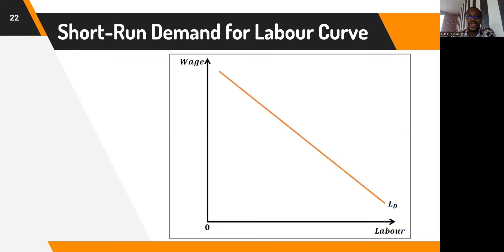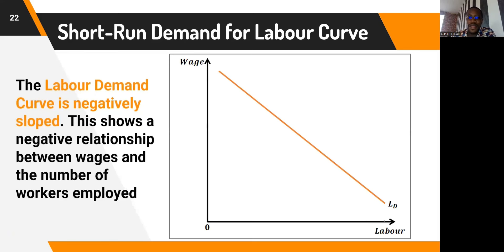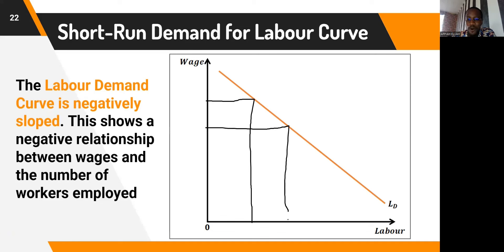When the wage rate was 22 Ghana Cedis, the firm employed eight workers. When the wage decreased to 18 Ghana Cedis, the firm employed nine workers. There is a negative relationship between wages and the number of workers: when wages decrease, employment increases. Therefore, the short-run demand for labor curve is downward sloping — it is negatively sloped — showing a negative relationship between wages and the number of workers employed.